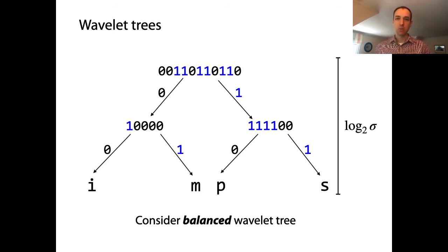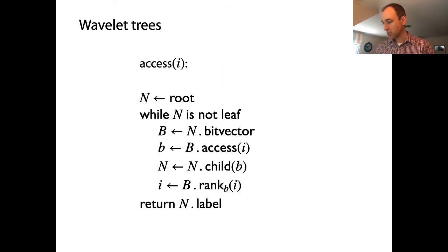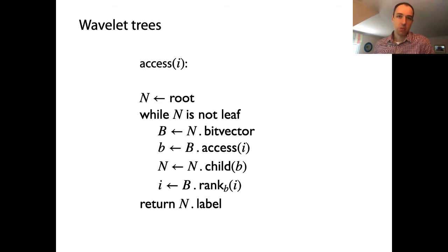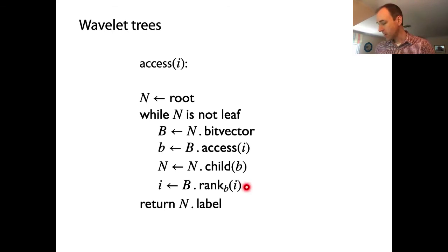Let's bring back those algorithms from the previous video and take a look at what's going on inside the loop. Here's the access query. What's going on in the inner loop? We're letting the bit vector in the parent node be called b and doing an access query on that bit vector. We know that an access query is constant time — it's really just accessing a bit in a bit vector.